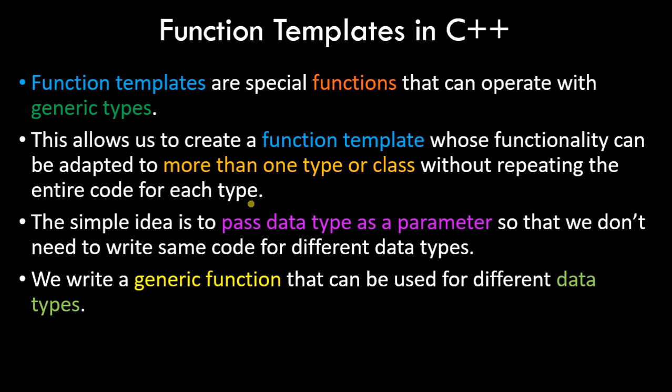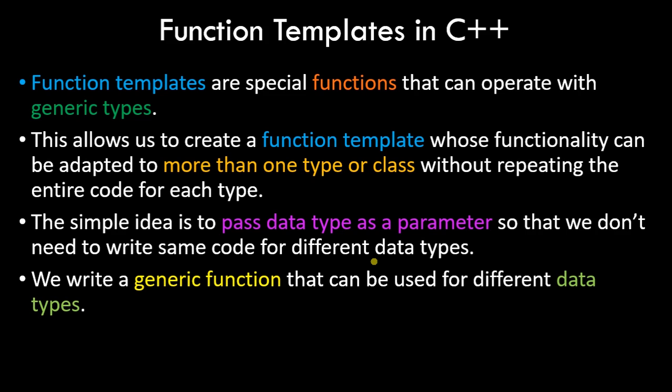The simple idea is to pass data type as a parameter. Just as we pass variables as parameters, we can pass data type as a parameter so we don't need to write the same code for different data types. This gives us polymorphic kind of functionality. We've already discussed polymorphism extensively — function overloading, operator overloading, and function overriding — in this entire playlist, so you can check those videos as well.